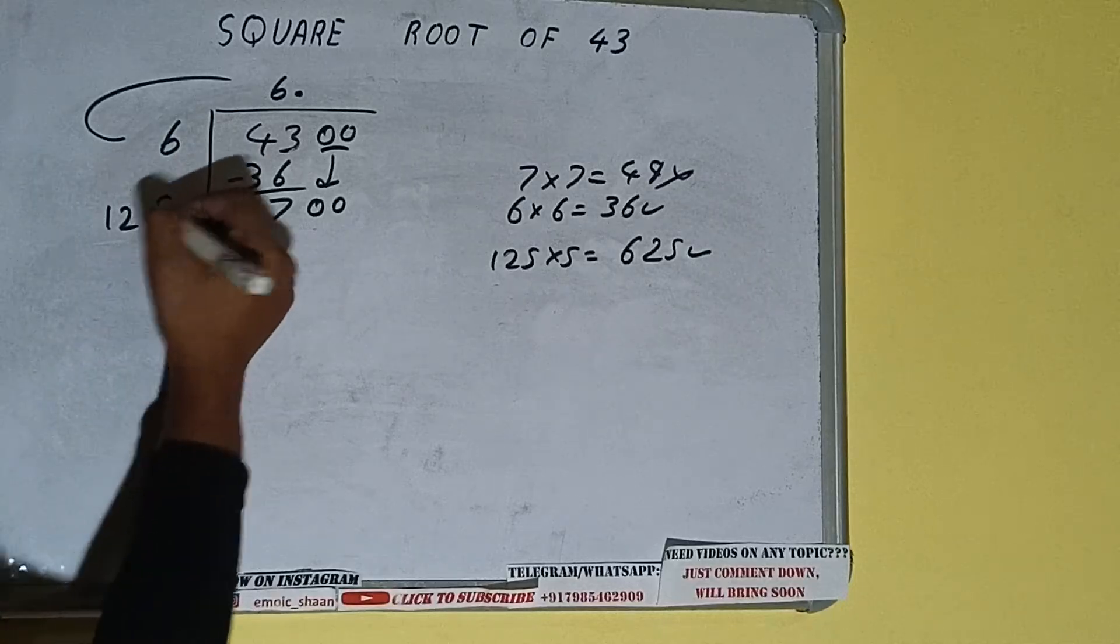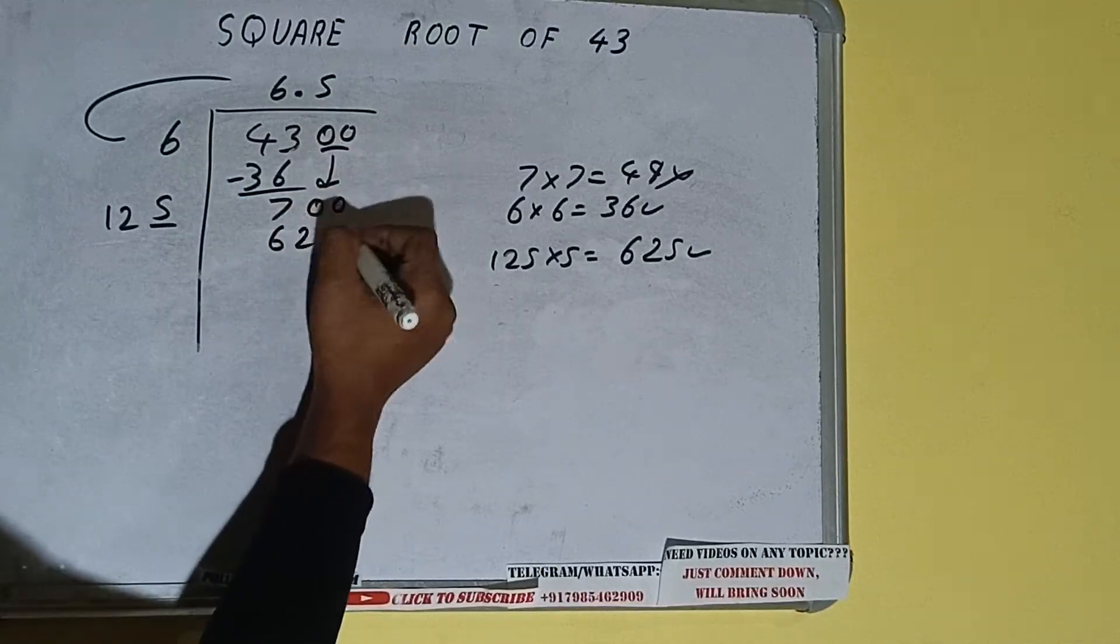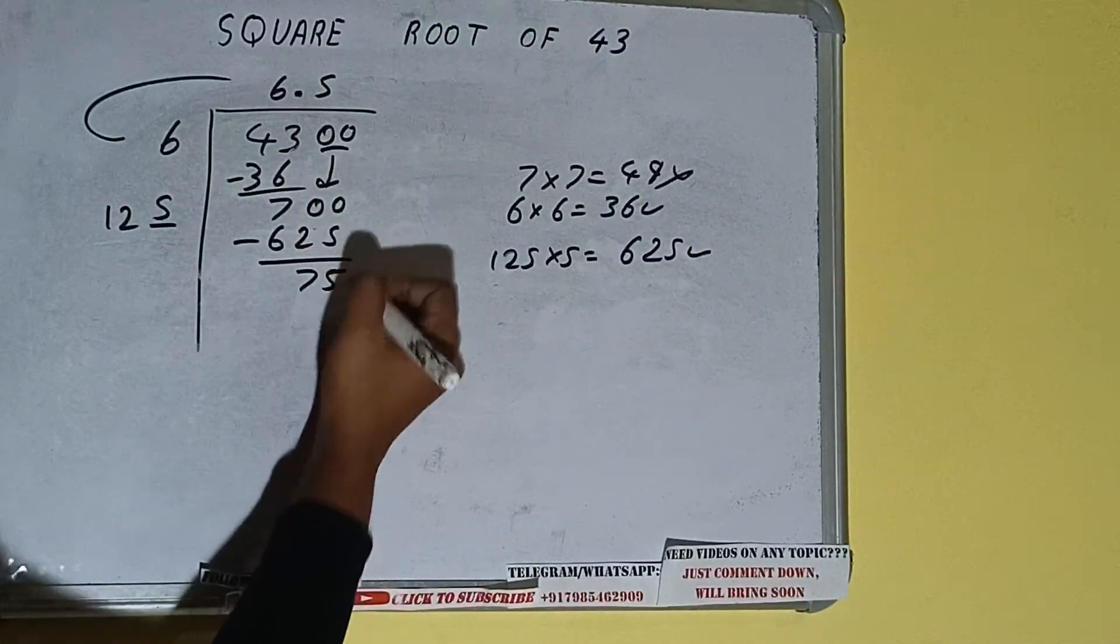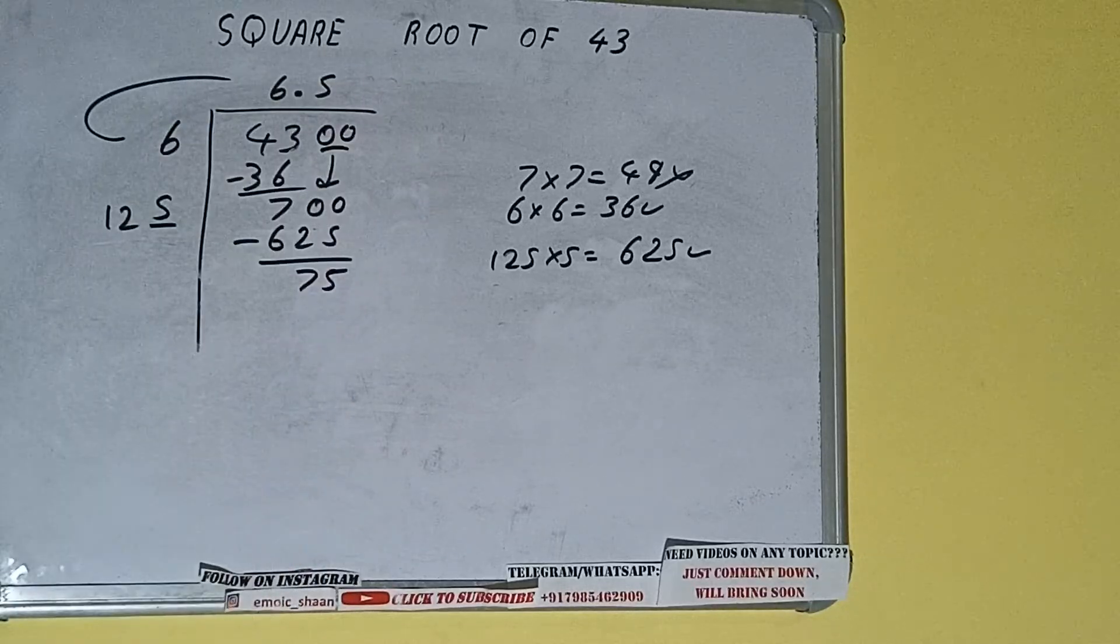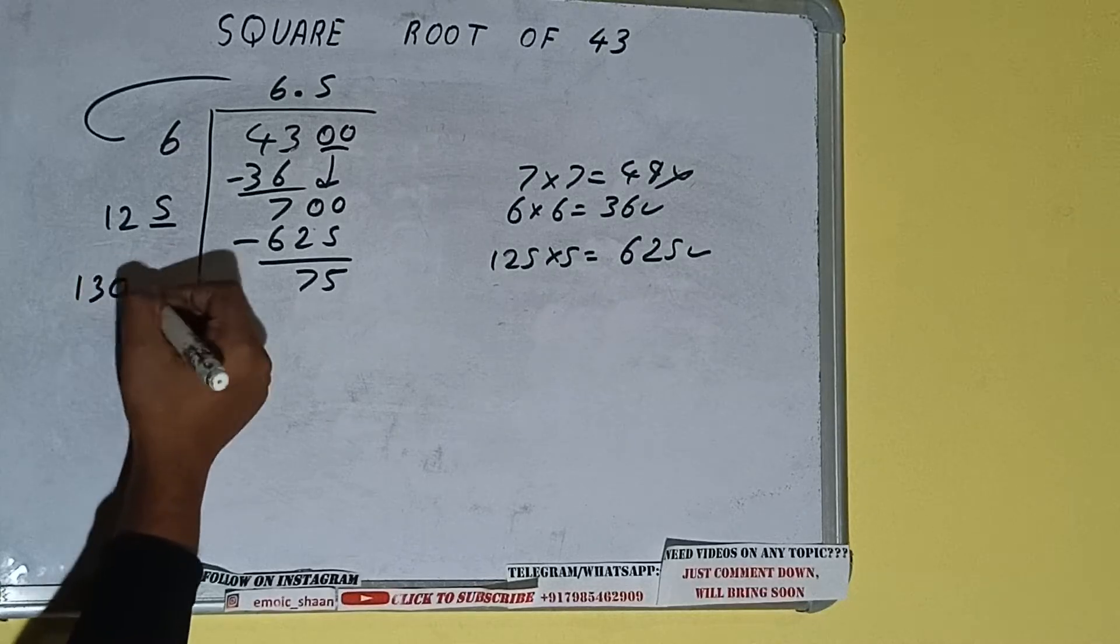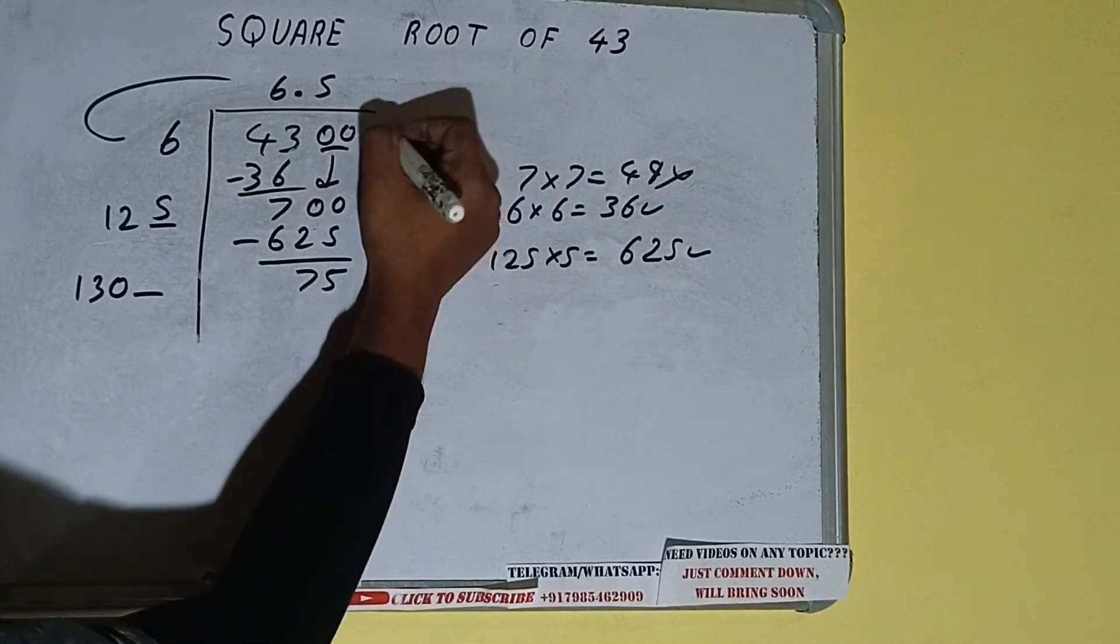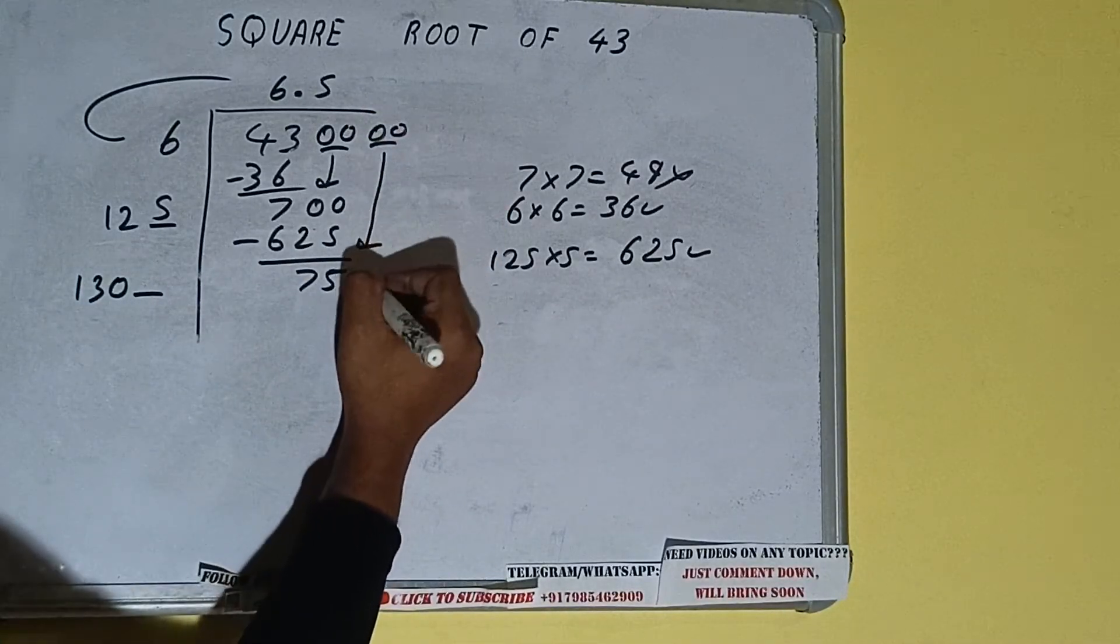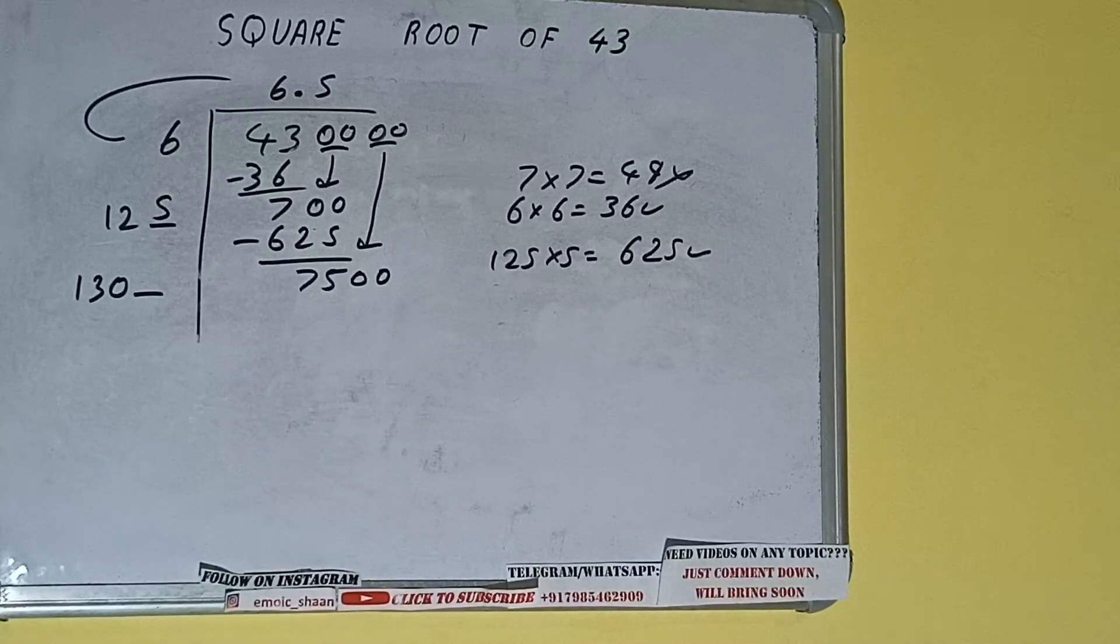So 5 here and 5 here, 625. Subtract, 75 will be left. Now 125 into 5, so add both. 125 plus 5 will be 130 and 1 digit extra. This number we need to make big, so bring the next pair of zeros down and it will be 7500.